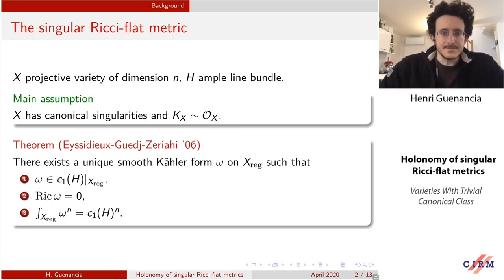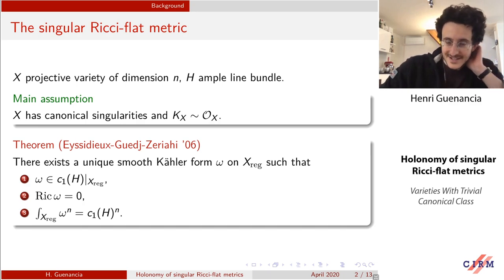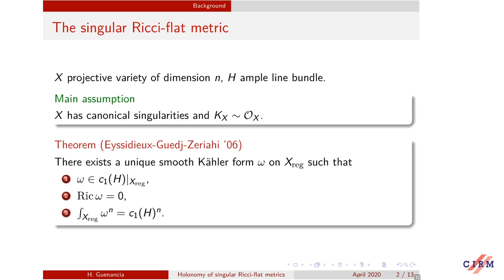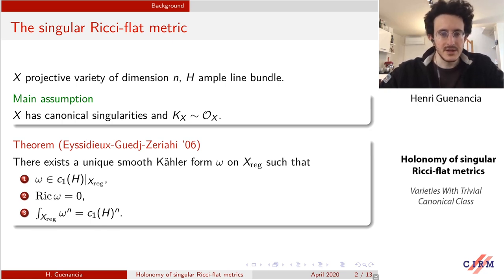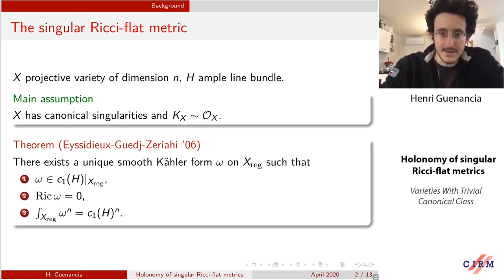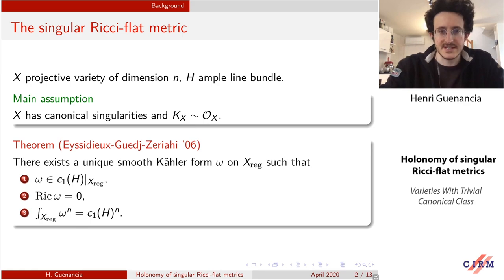The main object in this talk is the singular Ricci-flat metric. Let me set the notation and the objects we'll work with throughout the talk. X will be a projective variety of dimension n, and we fix an ample line bundle H. Most of what follows will depend on H in a more or less explicit manner, so we'll think of H as a fixed line bundle.